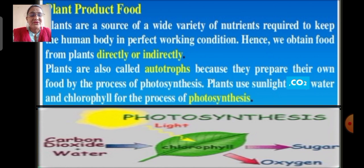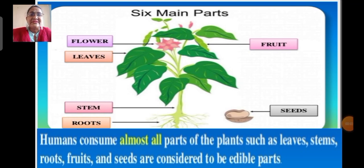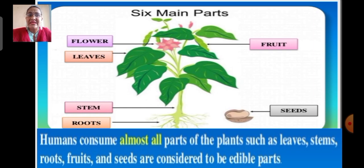Here is the diagram of the six main parts of the plant: roots, stem, leaves, flower, fruit and seeds. Humans consume almost all parts of the plant — leaves, stems, roots, fruits and seeds are considered to be edible parts. Edible means the parts we can eat. So almost each part of the plant we eat.